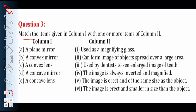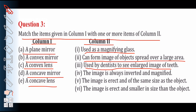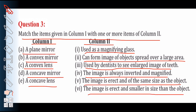Question number 3: match the items given in Column 1 with one or more items of Column 2. Column 1 has: a plain mirror, a convex mirror, a convex lens, a concave mirror, and a concave lens. Column 2 options include: used as a magnifying glass, can form image of objects spread over a large area, used by dentists to see a large image of teeth, the image is always inverted and magnified, the image is erect and of the same size as the object, and the image is erect and smaller in size than the object.